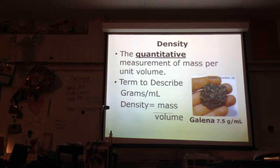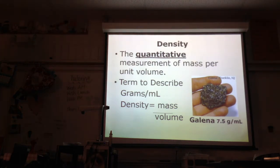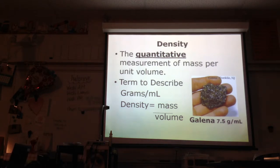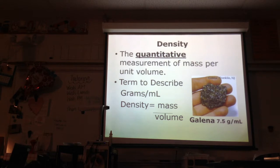Density — we talked about earlier this year. Density is mass divided by volume. It's a quantitative measurement, which means we use numbers. We measure it in grams per milliliter. The last property we'll look at is color. Color is a qualitative measurement, so we use letters and words to describe it.